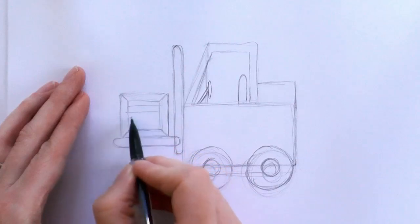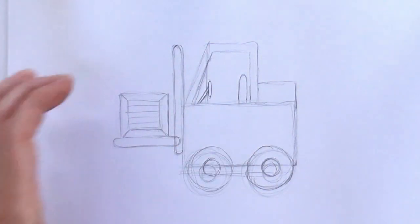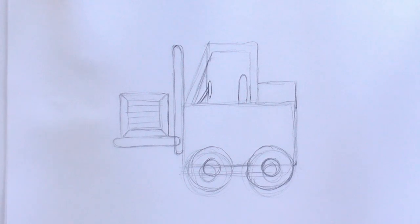And then we just draw some lines across to make it look like a wooden crate it's moving. Cool. Then we just grab our black pens and go in and ink in the pencil lines.